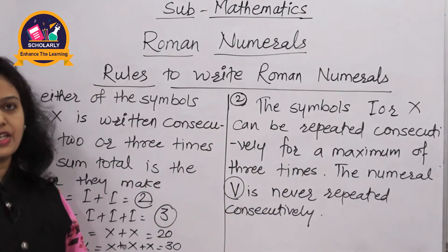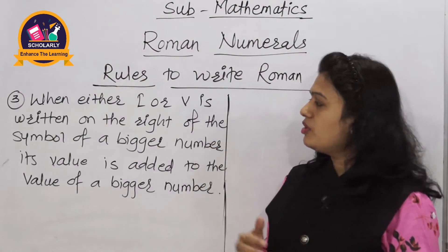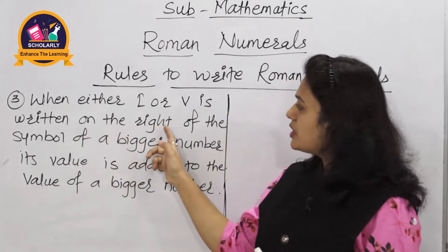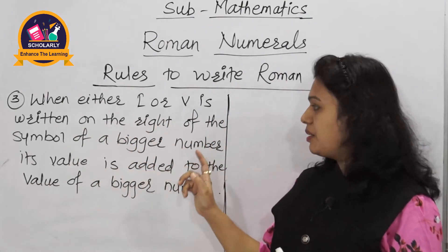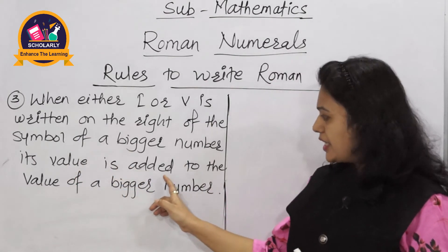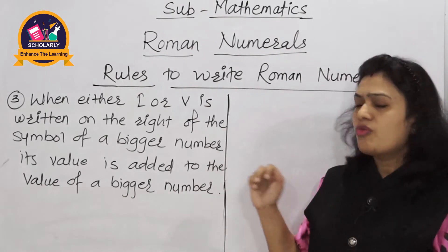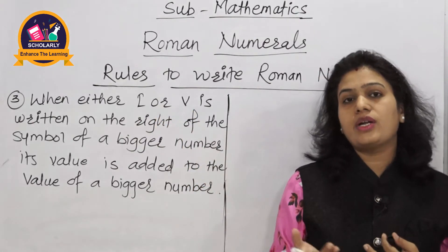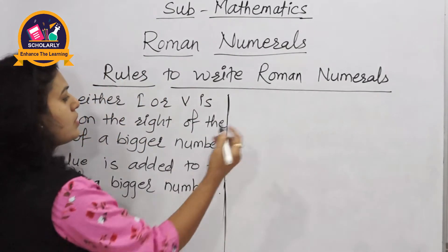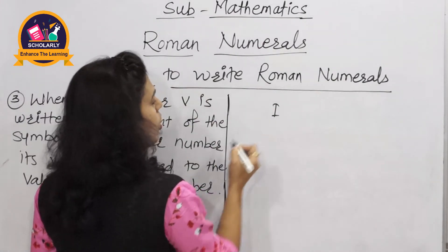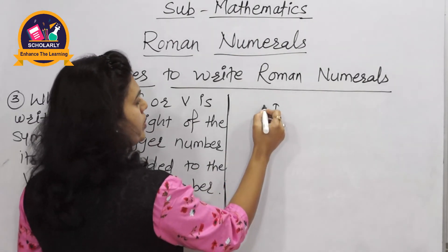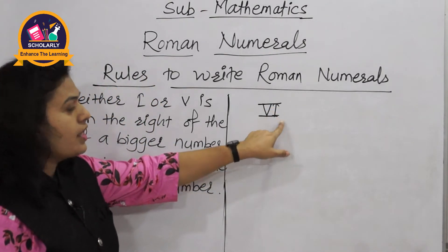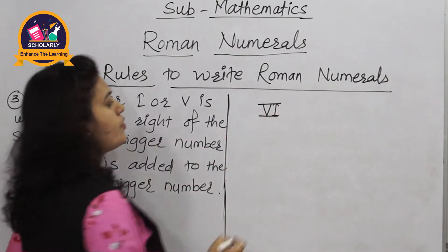The third rule for writing Roman numerals is: when either I or V is written on the right of a bigger number symbol, its value is added to the value of that bigger number. For example, if we write I on the right side of V — writing VI — then the value of I is added to the value of V.